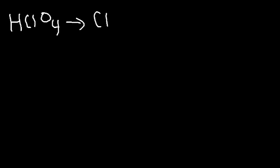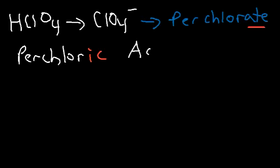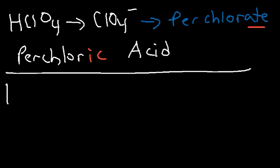Let's try more examples. What about HClO₄? The polyatomic ion ClO₄⁻ is called perchlorate. Since it ends with the suffix '-ate', we need to replace it with '-ic'. So we write the same name but instead of 'perchlorate', it's going to be perchloric acid. Now what about HClO? Go ahead and name this acid. HClO has the polyatomic ion—